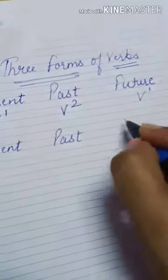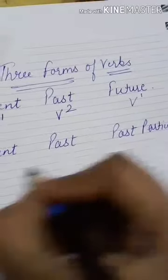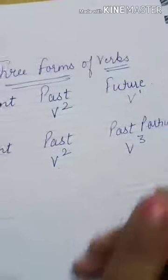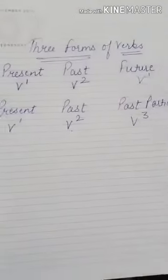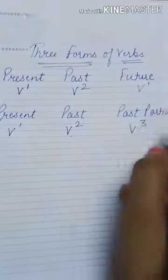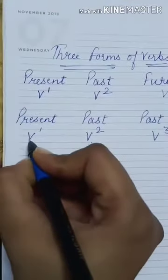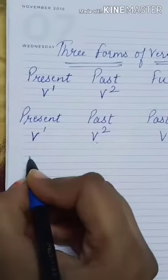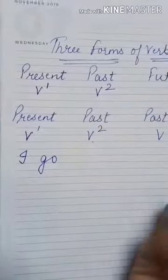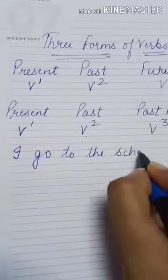The third form of the verb is past participle. You have already taken a test on the second form of the verb, now you have to learn the third form also. For present tense, I'm making a sentence — 'I go to the school.' This is your present tense.